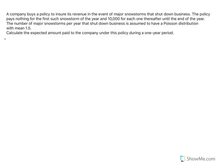A company buys a policy to insure its revenue in the event of major snowstorms that shut down business. The policy pays nothing for the first such snowstorm of the year and $10,000 for each one thereafter until the end of the year. The number of major snowstorms per year that shut down business is assumed to have a Poisson distribution, so I'll call X the number of snowstorms. That has a Poisson with mean 1.5. Calculate the expected amount paid to the company under this policy during a one-year period.